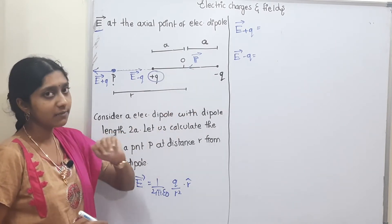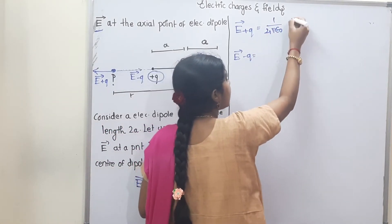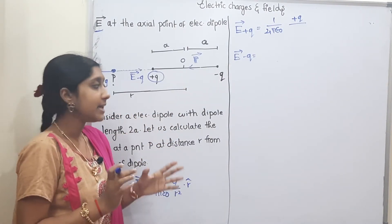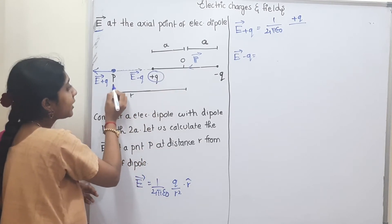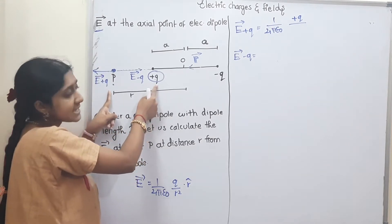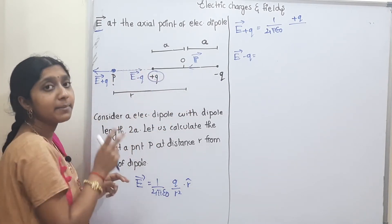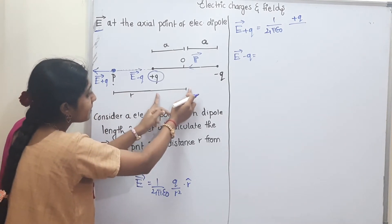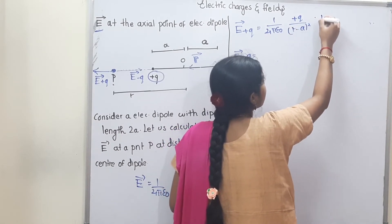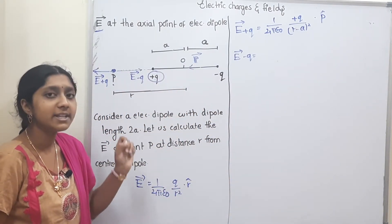First, we derive the electric field due to plus q. That is E₊q = 1/(4πε₀) × q/(r−a)², in the direction of p̂. The distance from plus q to point P is r minus a. Because the dipole has a dipole moment, the direction is p̂.